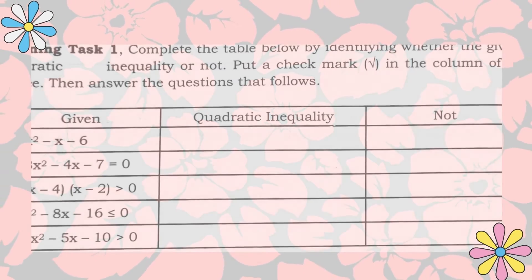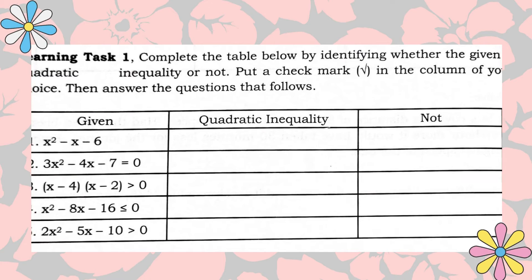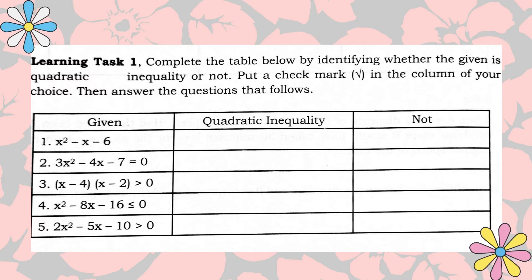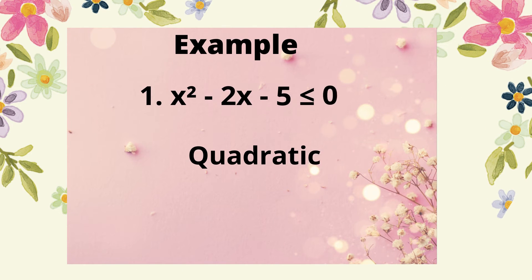For the learning task 1 in your module, the instruction stated that you are going to identify whether the given is quadratic inequality or not. Let's have example 1. The given is x² - 2x - 5 ≤ 0. And the answer for this given is quadratic inequality. Because the highest degree is 2 and the inequality symbol is used.